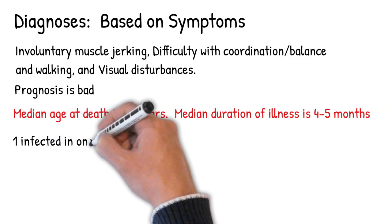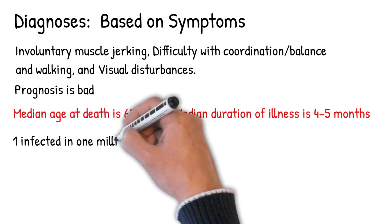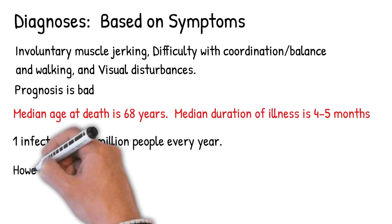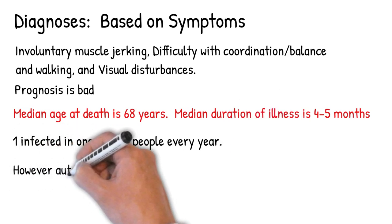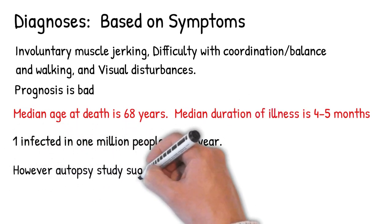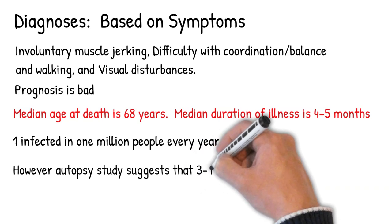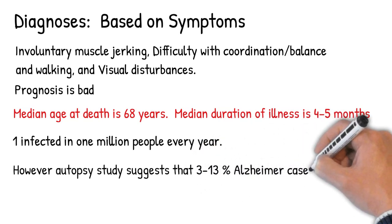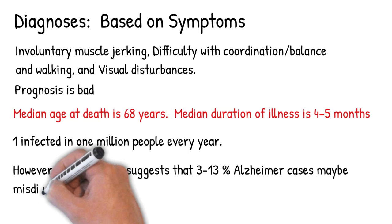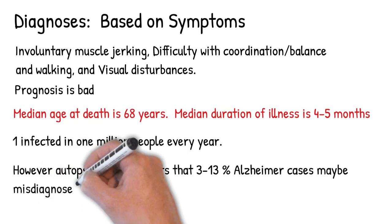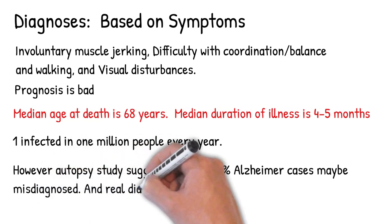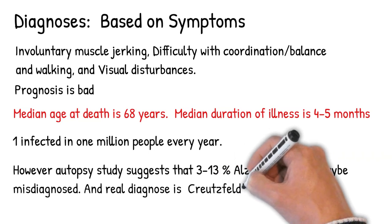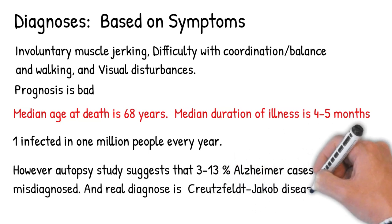Creutzfeldt-Jakob disease is a rare disease, affecting one in 1 million people every year. However, autopsy studies suggest that 3 to 13% of Alzheimer's cases may be misdiagnosed, with the real diagnosis being CJD, presumably related to eating beef from cattle, resulting in BSE — bovine spongiform encephalopathy — which has a very long incubation period. BSE usually affects people aged 45 to 75 years.